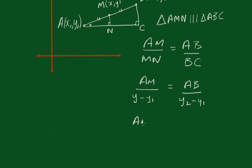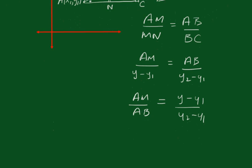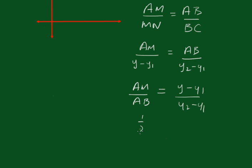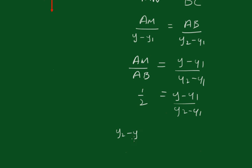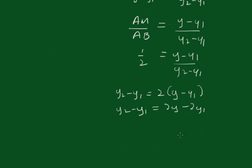Therefore swapping over we get AM/AB equals (y - y₁)/(y₂ - y₁). AM over AB is a half, and of course that becomes y₂ minus y₁ equals 2(y - y₁). So y₂ minus y₁ equals 2y minus 2y₁, therefore y₁ plus y₂ equals 2y, and hence y equals (y₁ + y₂)/2.